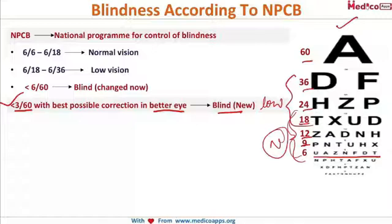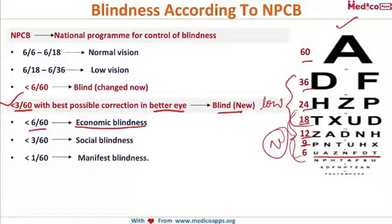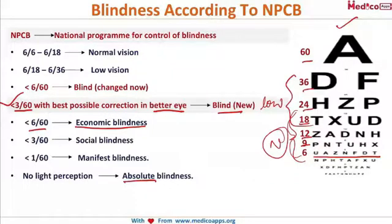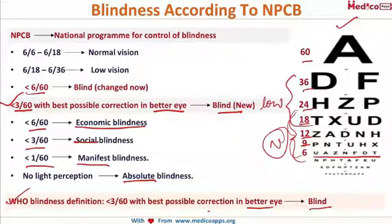There are specific terms to remember: economic blindness is less than 6/60 — the patient is not fit to earn a livelihood. Social blindness is less than 3/60 — the patient cannot interact with those around them. Manifest blindness is less than 1/60. Absolute blindness is no perception of light. There is one difference between NPCB and WHO: WHO defines less than 3/60 with best possible correction in the better eye as blind. Earlier NPCB used less than 6/60, but now both WHO and NPCB agree — less than 3/60 in the better eye is blind.